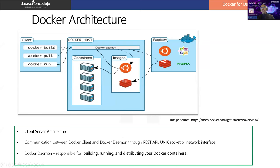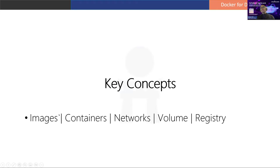For example, take the Redis image — Redis is a popular key-value caching database. It's published by Redis, and if you want to run it on your system you just pull the image and run it on a particular port. It's very easy compared to installing directly on the host, which can be complicated on Windows or Mac. There's a Docker client connecting to the Docker host managing images, containers, networks, volumes, and registry.